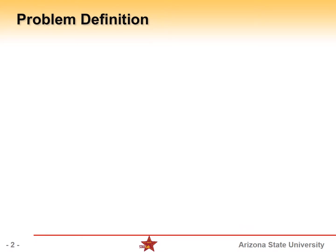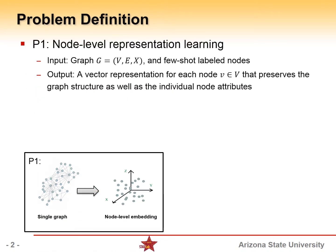Thus, we first provide our problem definition on node-level and graph-level representation learning. Node-level representation learning aims to learn the representation for each node in a network.